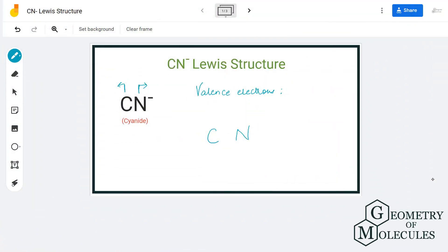Hi guys, today in this video we are going to look at the Lewis structure for cyanide ion. It is also known as cyanide anion, and to understand its Lewis structure we will first check the total number of valence electrons.